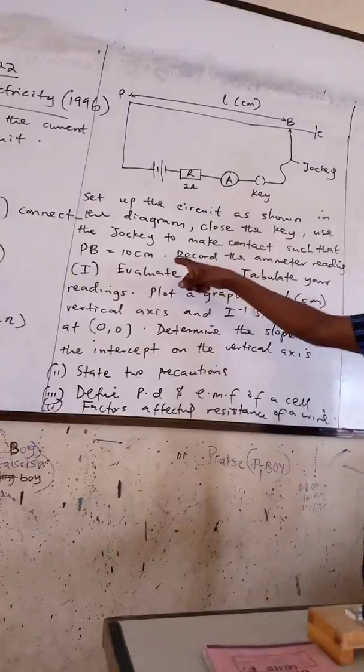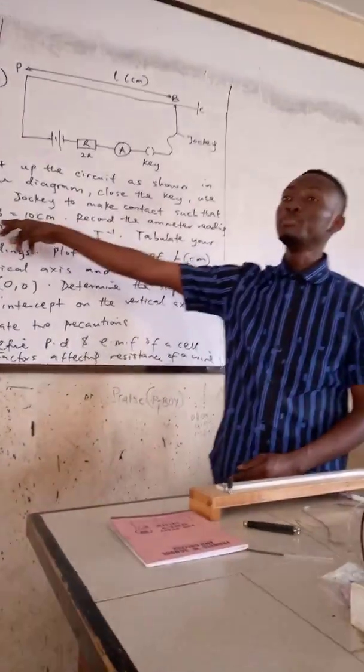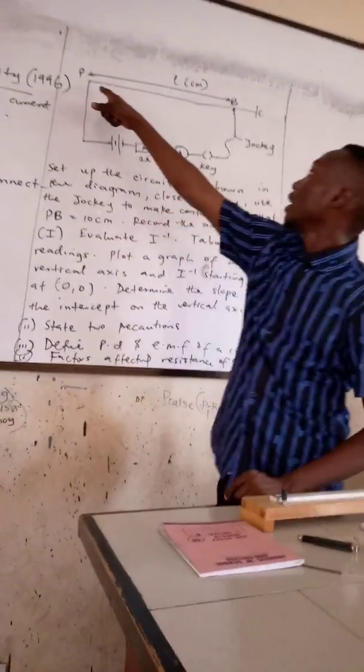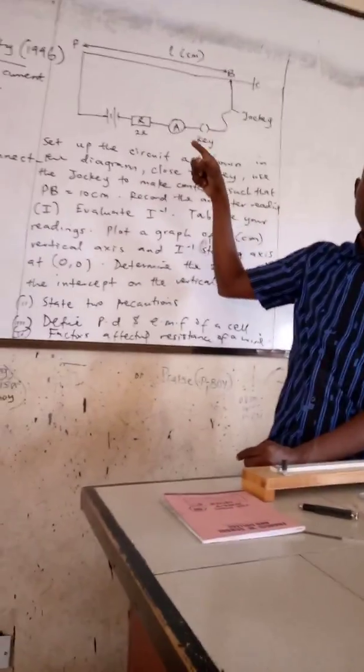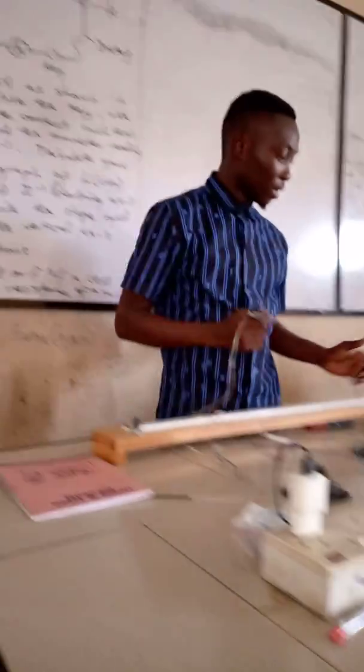The next thing we are going to do is to take the same set of apparatus which we can use the jockey to make contact so that PB is equal to 10cm. The length of PB was 10cm. When I use this I am going to make contact with the potentiometer. At 10cm, once I make contact with 10cm, I am going to see a deflection on the ammeter.